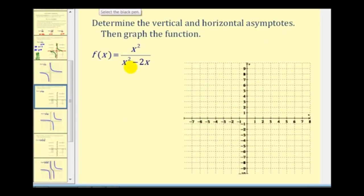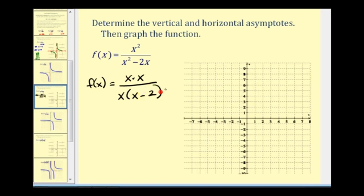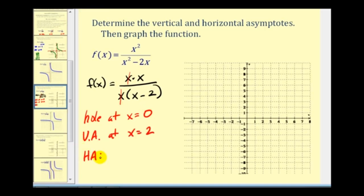Let's take a look at another example. The first step is to factor both the numerator and denominator. X squared factors as x times x, and the denominator also has a common factor of x. So even though zero and two are zeros of the denominator, they both do not result in vertical asymptotes.